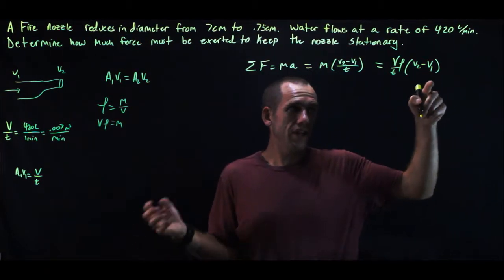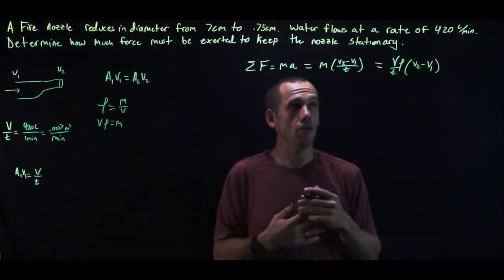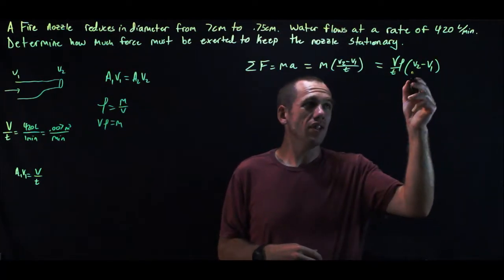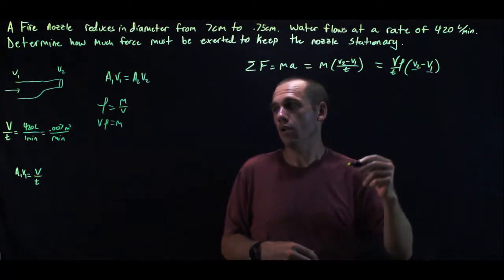Density times V2 minus V1. I don't know V2 or V1, but I do know the density of water. So let's look at how I can get V2 and V1.